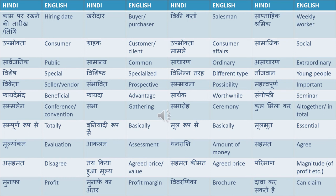Vishesh means special. Vishisht means specialized. Vibhinn tarha means different types — you might have come across dialogues wherein they would say 'yeh vibhinn tarha ke utpad banaate hain' — different types of products. Naujawan means young people — or you can say youngster. Vikreta means seller or vendor. Sambhavit means prospective.